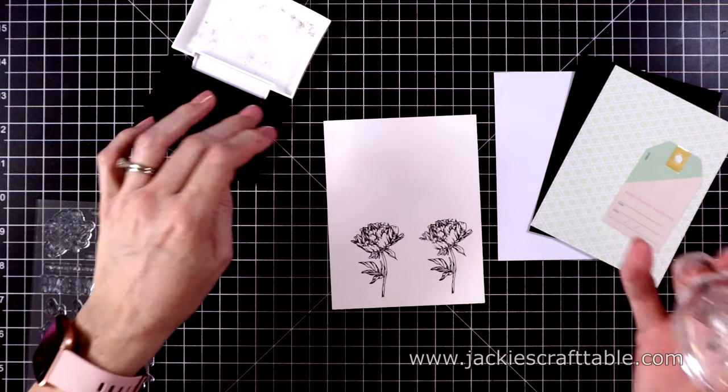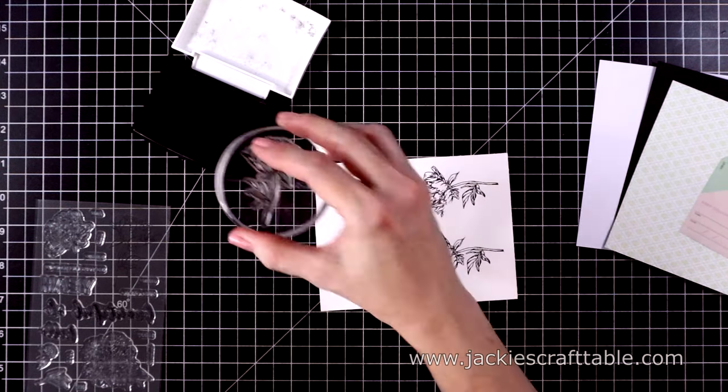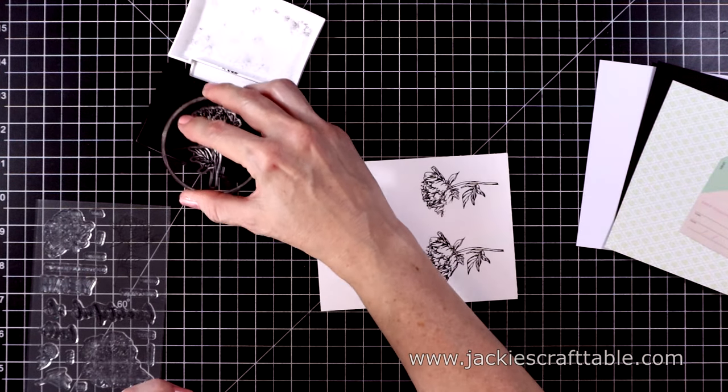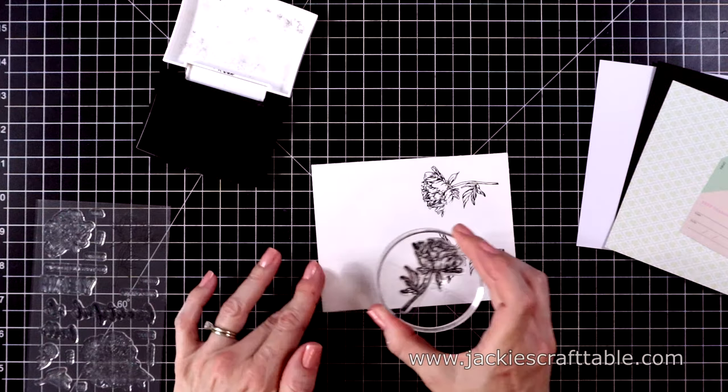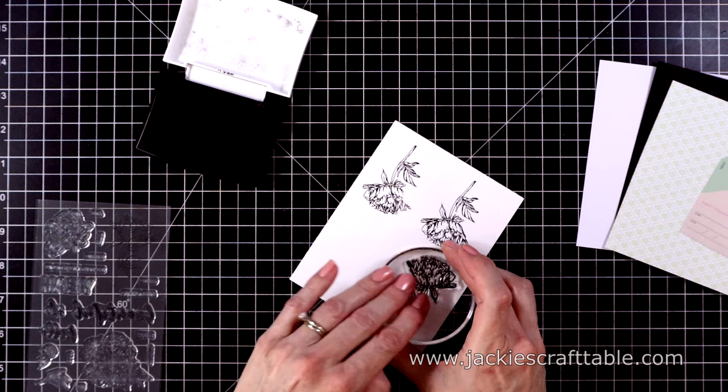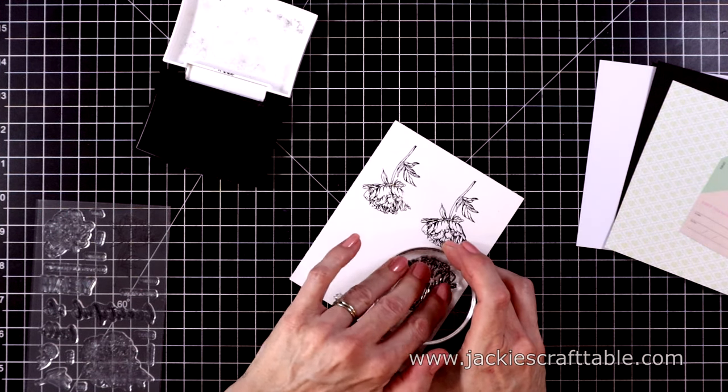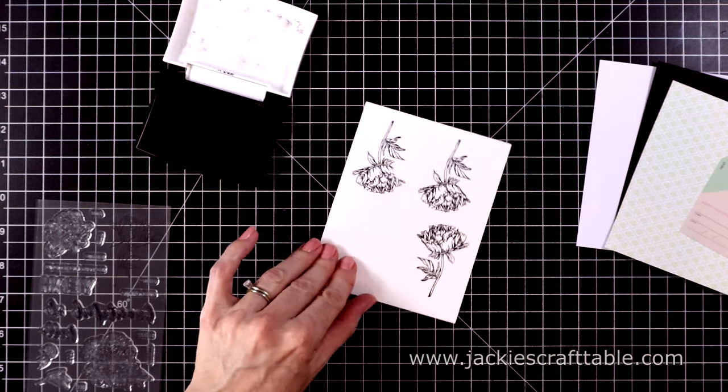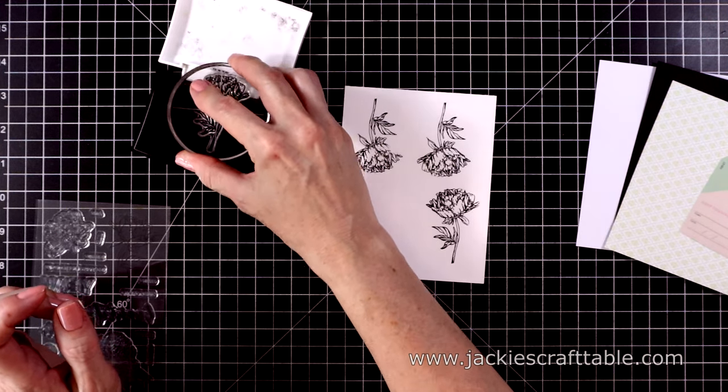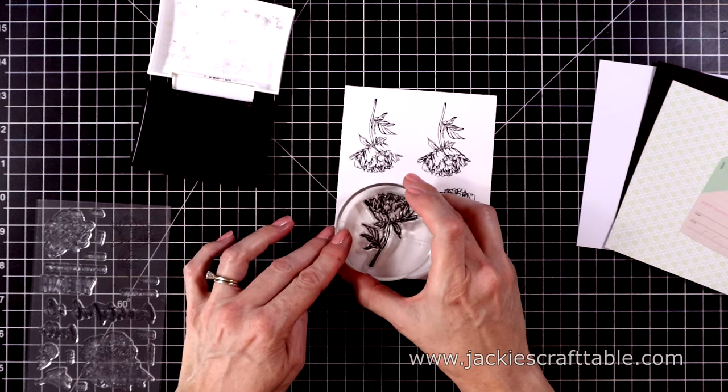This is some Versafine Onyx Black ink I'm using. And then I'm going to stamp it two more times. Then I'll have some of these flowers that I can use on the insides of my cards if I want to. But I love that this one has a die to cut it out.